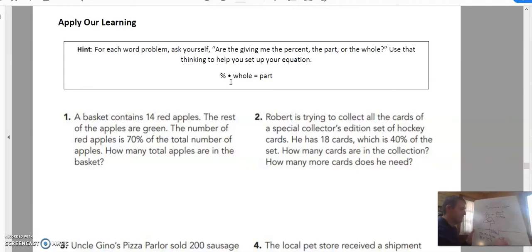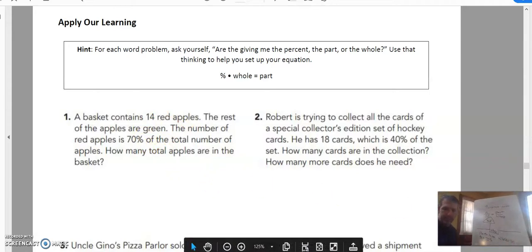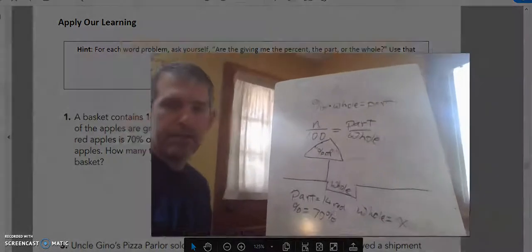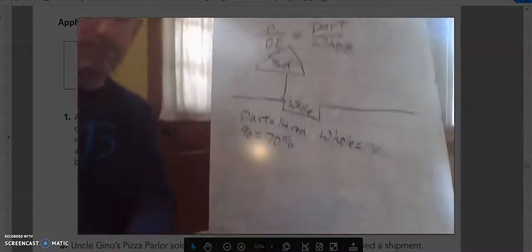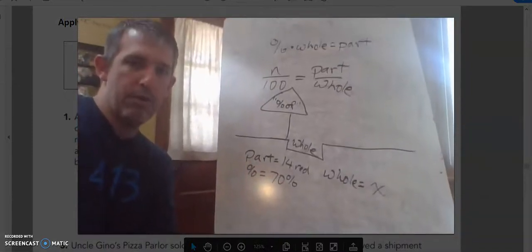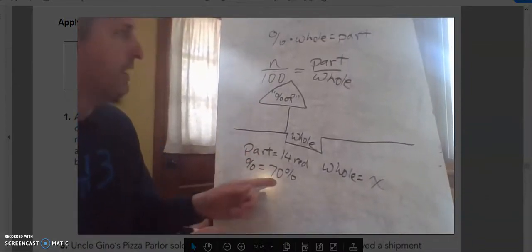The number of red apples is 70%. So the percent of red apples is 70%. So what is left over? It's our whole. Which makes sense because we don't know how many total apples there are. That word total almost always means the whole. So that's what I'm looking for. So I'm going to put an x there. Now I'm going to use this equation.